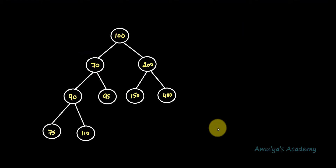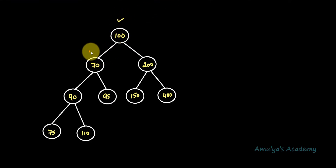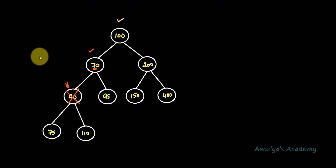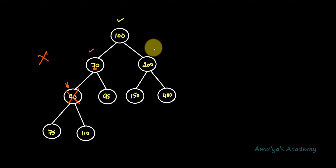Let's take another example. This is a binary tree with root 100. In the left subtree we have 70, so 70 is less than 100 — correct. But then we check node 90, which is greater than 70 and is present on the right side of 70. That means it is not following the BST property — on the left side of 100 we should have all nodes less than 100, but node 90 is greater than its parent 70 yet still in the left subtree. So this is not a binary search tree.